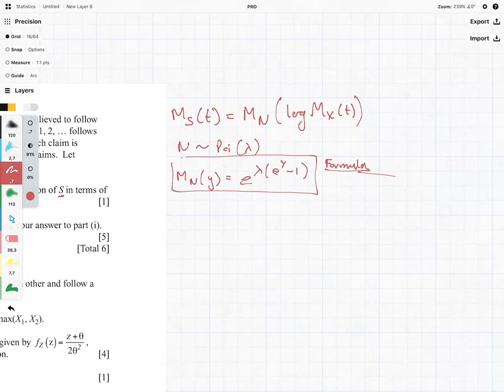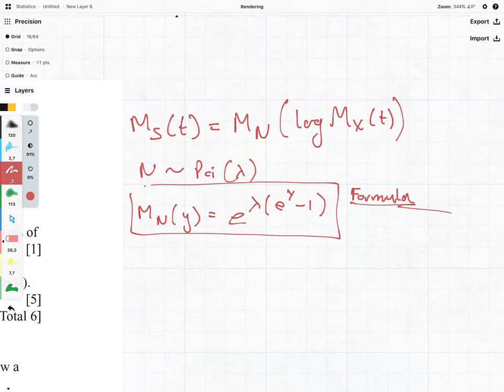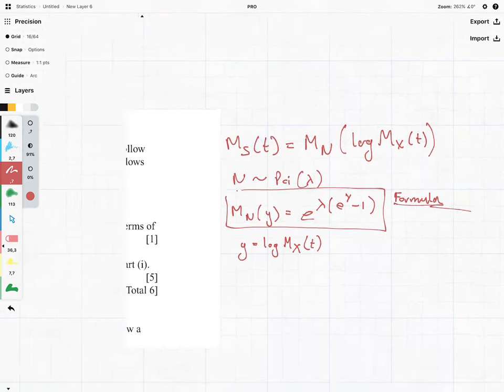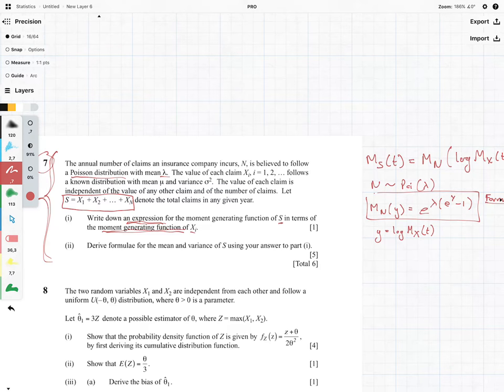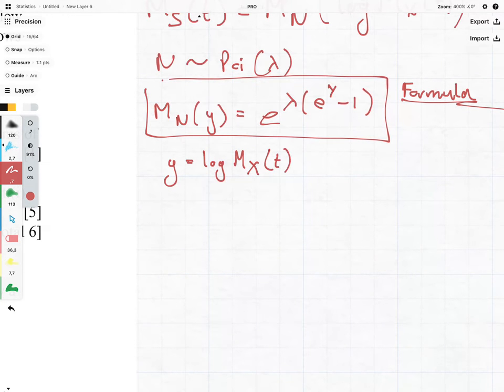But now we have a situation where y needs to be substituted for the log of the moment generating function of Mx(t). We don't really know what the distribution of x is. We know it's a known distribution and it has these parameters, but we don't actually know what it is. But that's not too much of a problem because we know that MN of log Mx(t),